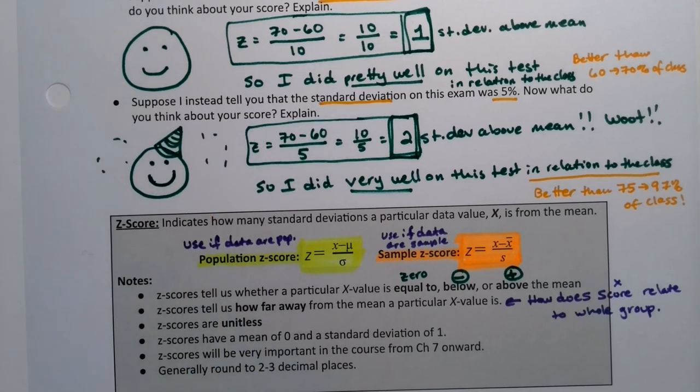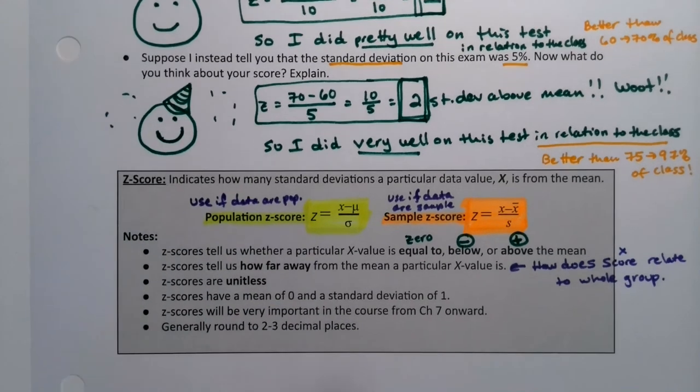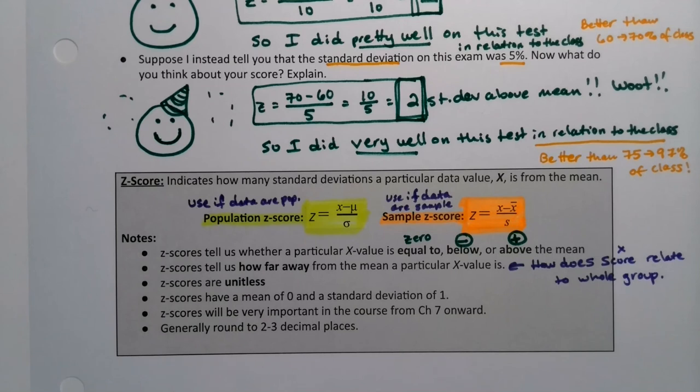And as I mentioned at the beginning of this, this will be a very important topic for chapter seven onward. We work with Z-scores all the time, pretty much every page from chapter seven onward. We generally round Z-scores to two to three decimal places. Out of convenience, you can do more, but we generally do not.